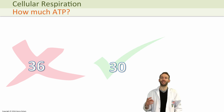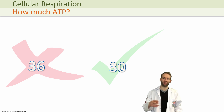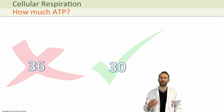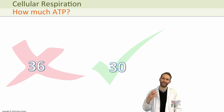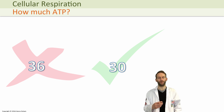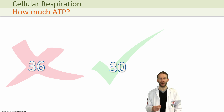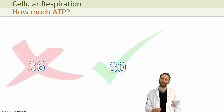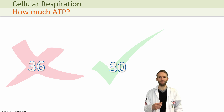Some of the ATP is actually used for other reactions and it's not a perfect process, so aerobic respiration probably rarely yields over 30 ATP. However, it's still a lot more effective than anaerobic respiration, which, as we've said already in this video, only yields 2 ATP.